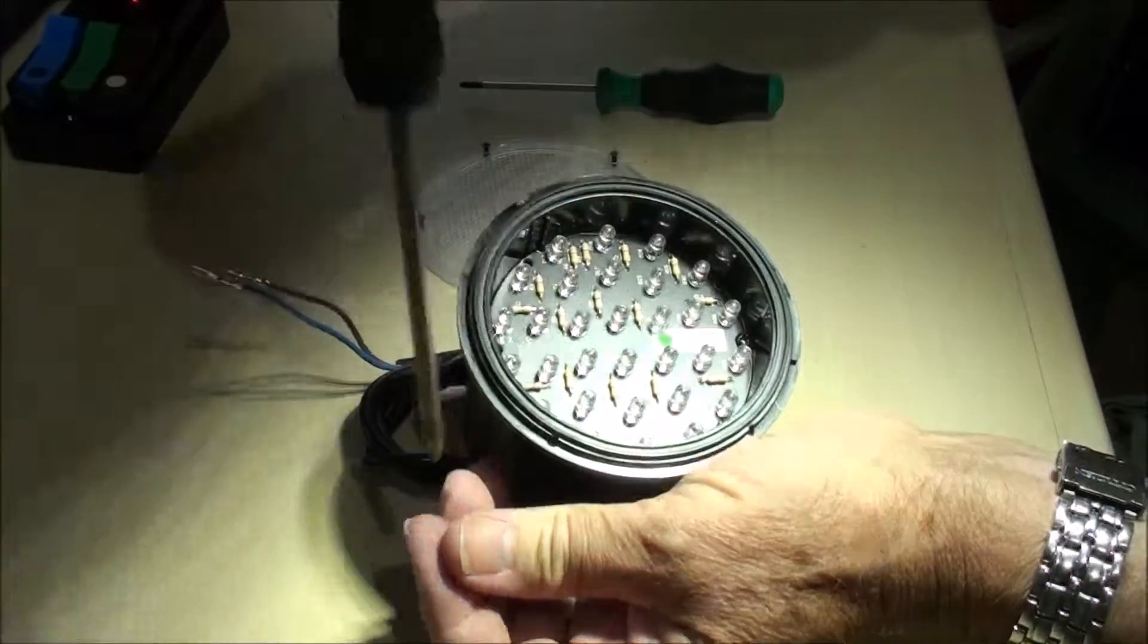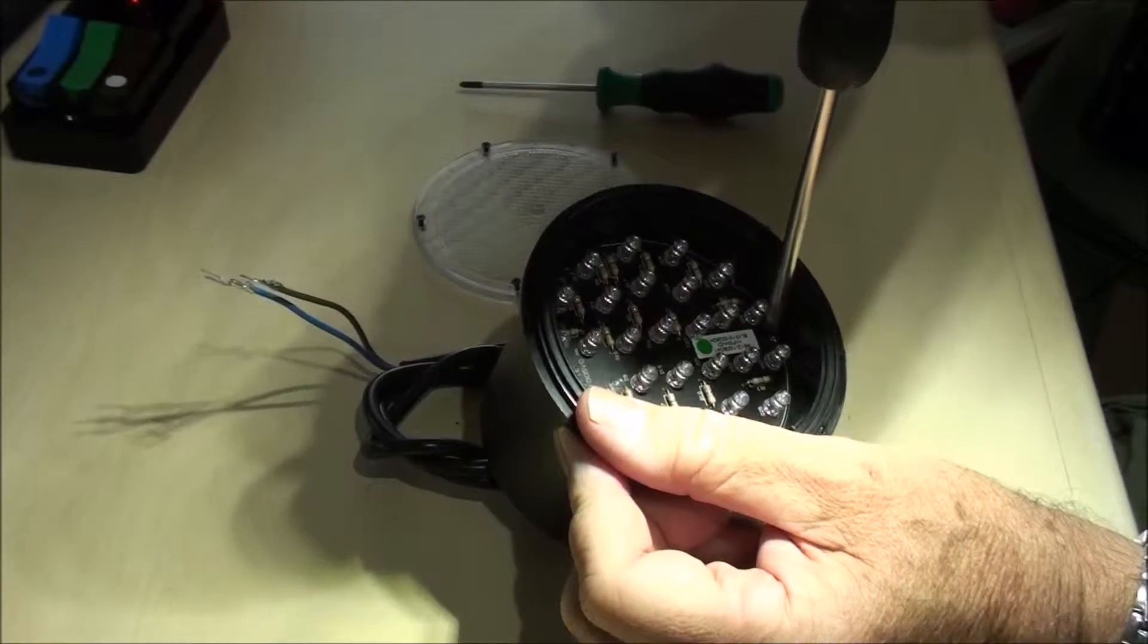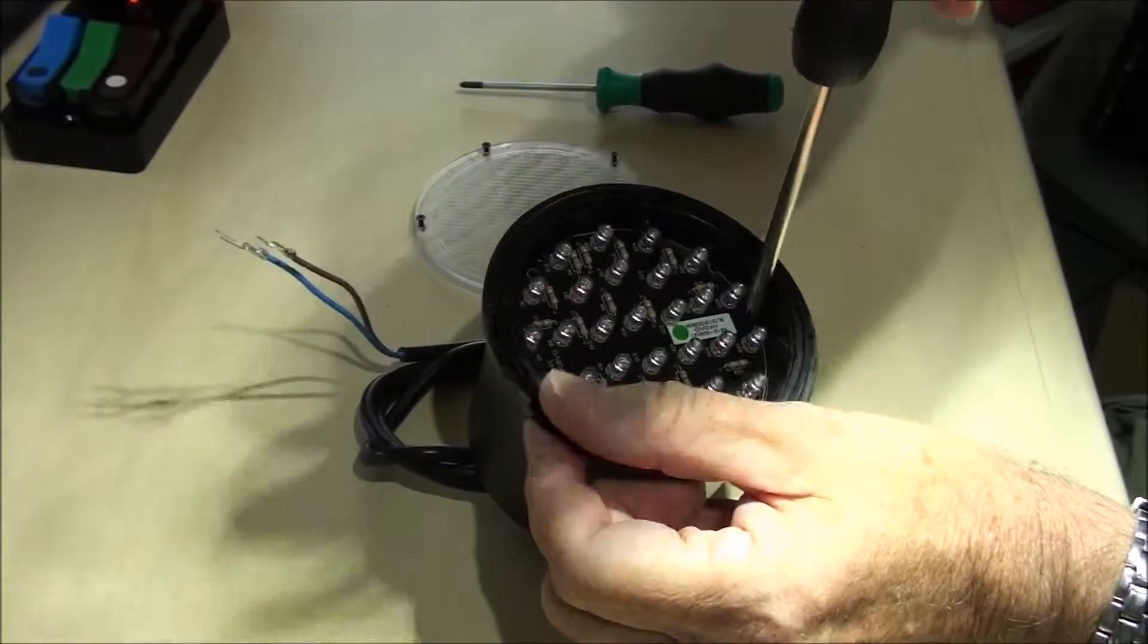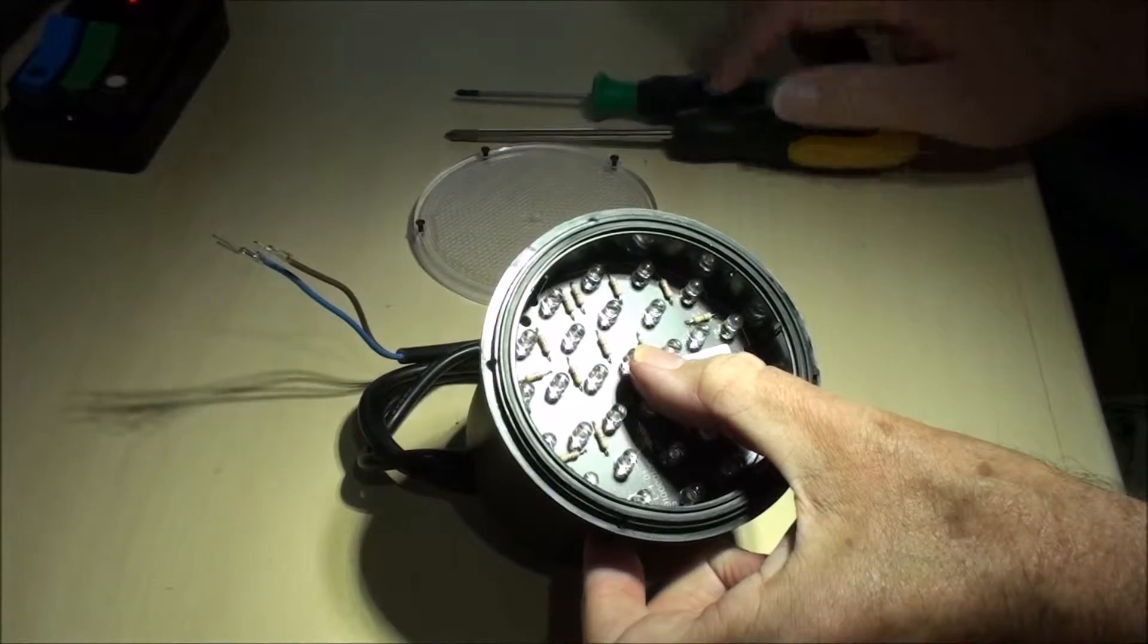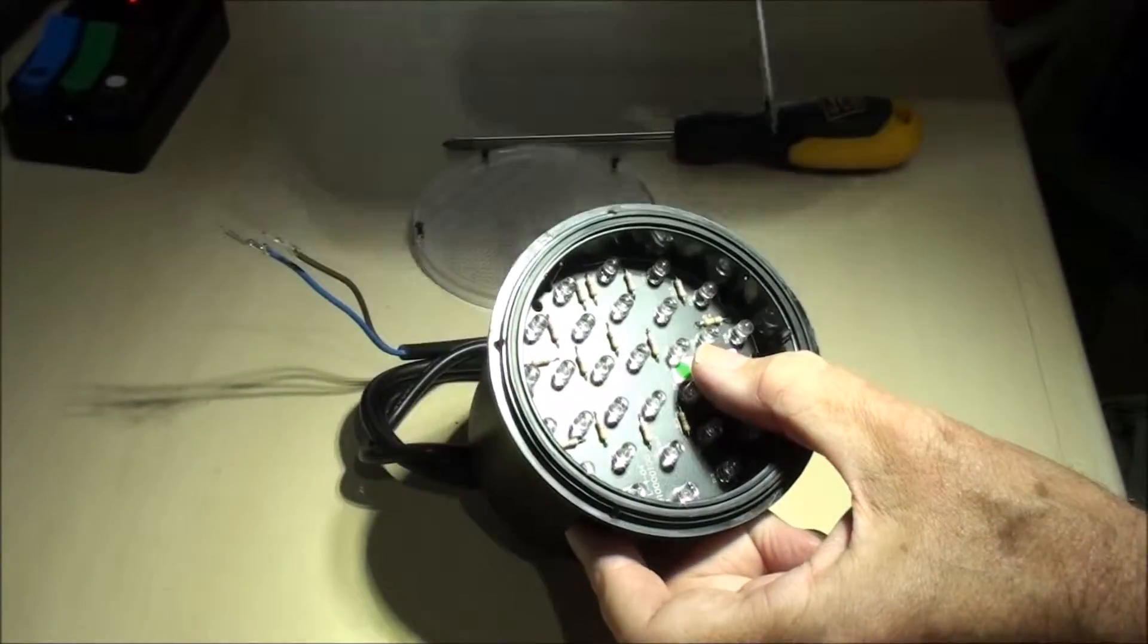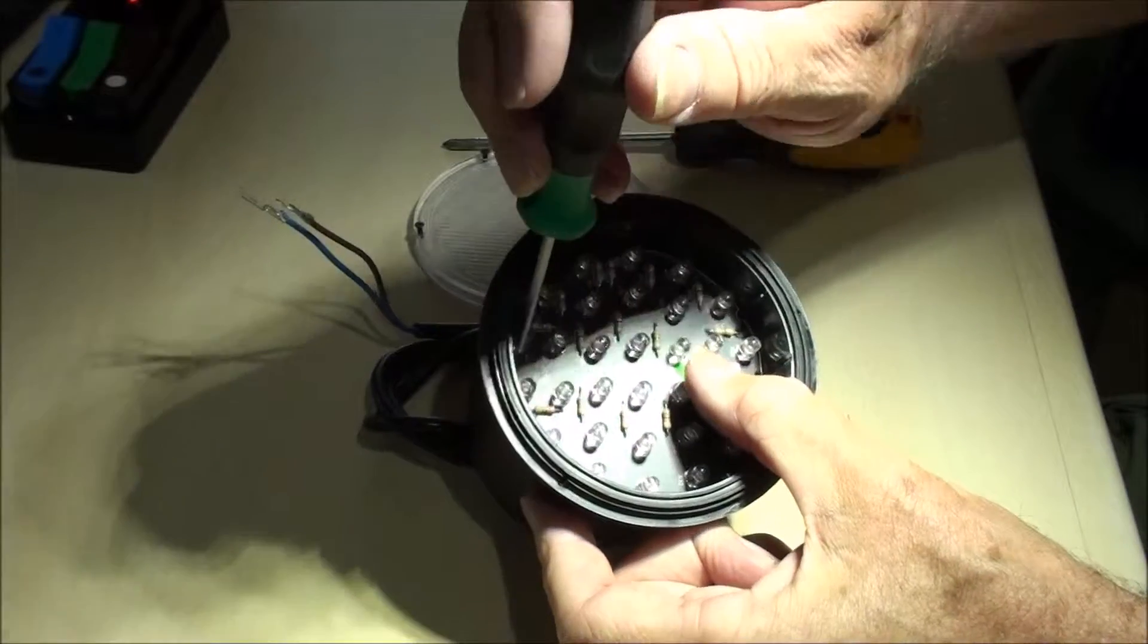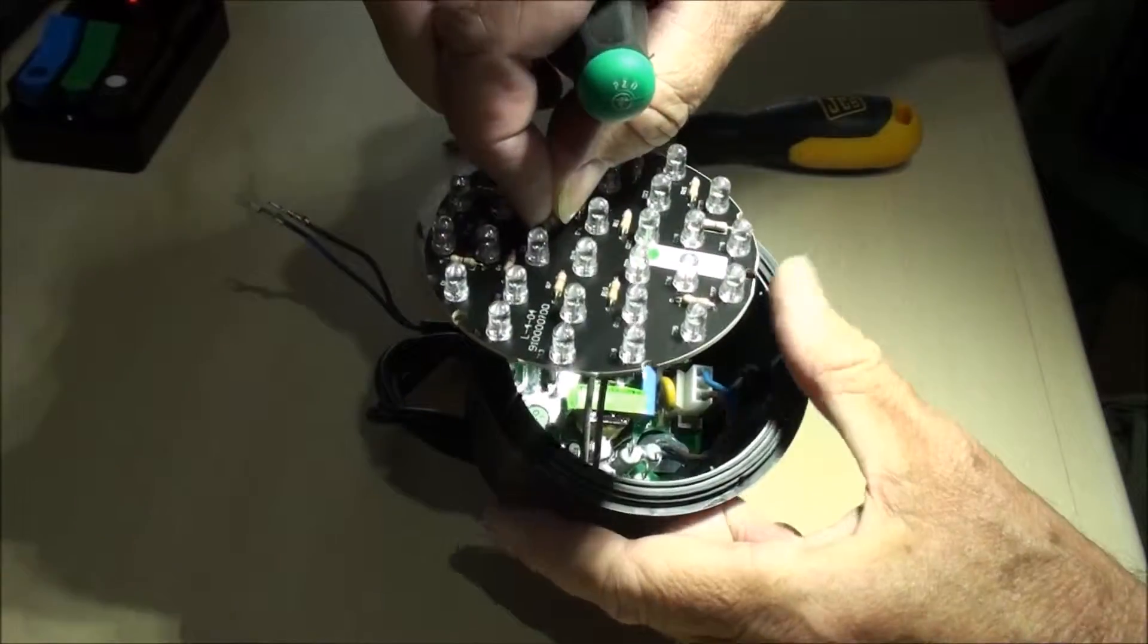So we take out the three screws, and then we're left with the board in place. Sometimes it can be a bit stiff to get out, this one particularly isn't, but if it is, you just stick your screwdriver in there and prise it up a little bit. And then pull the board out.